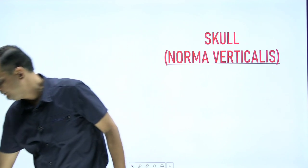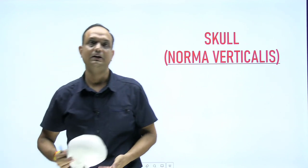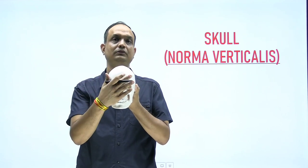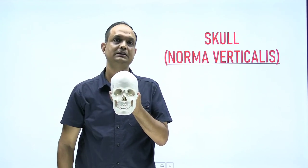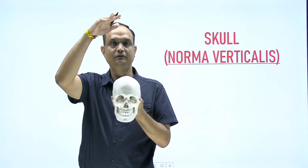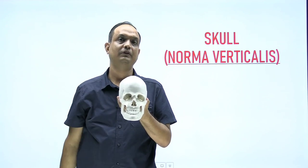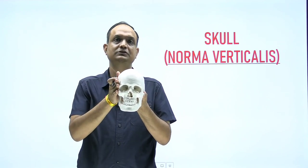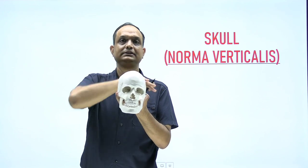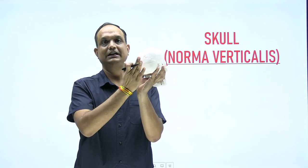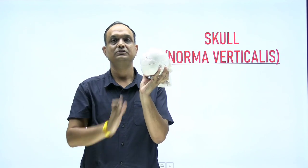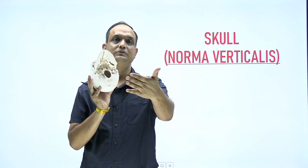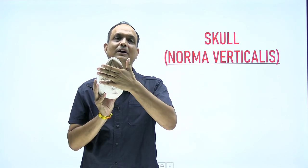When holding the skull, if you view it from the front, it is known as norma frontalis. If you are reading from above, it is known as norma verticalis. When you see from the sides, it is known as norma lateralis. When you see from the posterior side, it is known as norma occipitalis. And when you see from below, it is known as norma basalis.